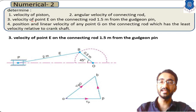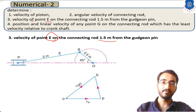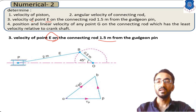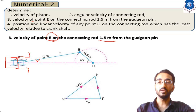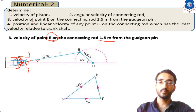Now let's move to the third part: finding the velocity of point E on the connecting rod, which is at 1.5 meter length from the Gudgeon pin. The Gudgeon pin is the pin connecting the connecting rod and the piston of a piston-cylinder arrangement. In this setup, the Gudgeon pin is point P.